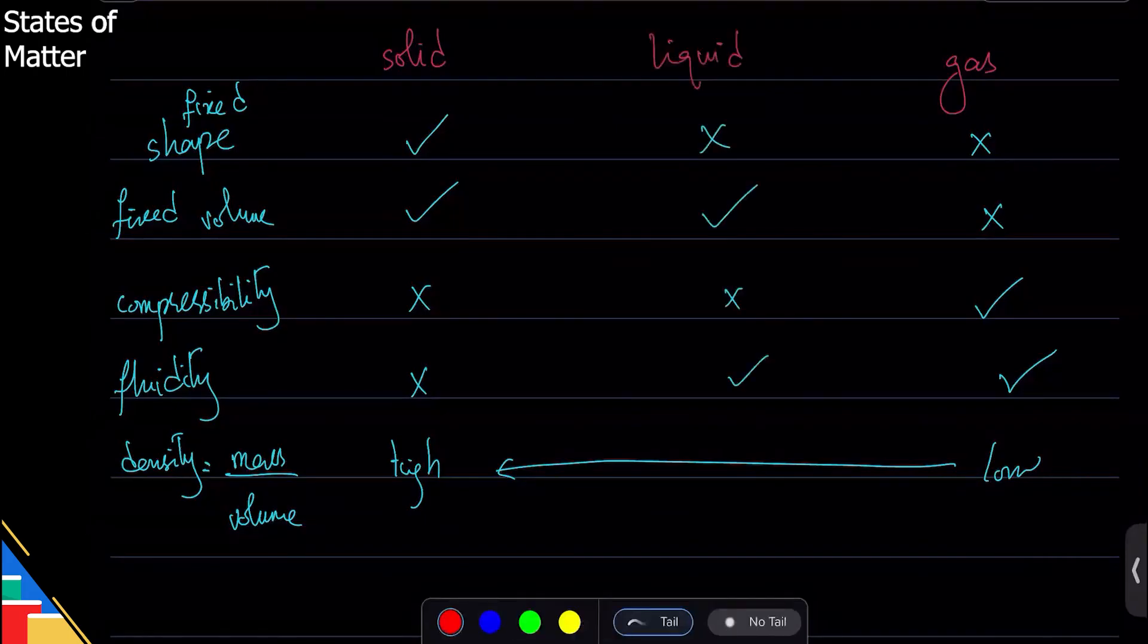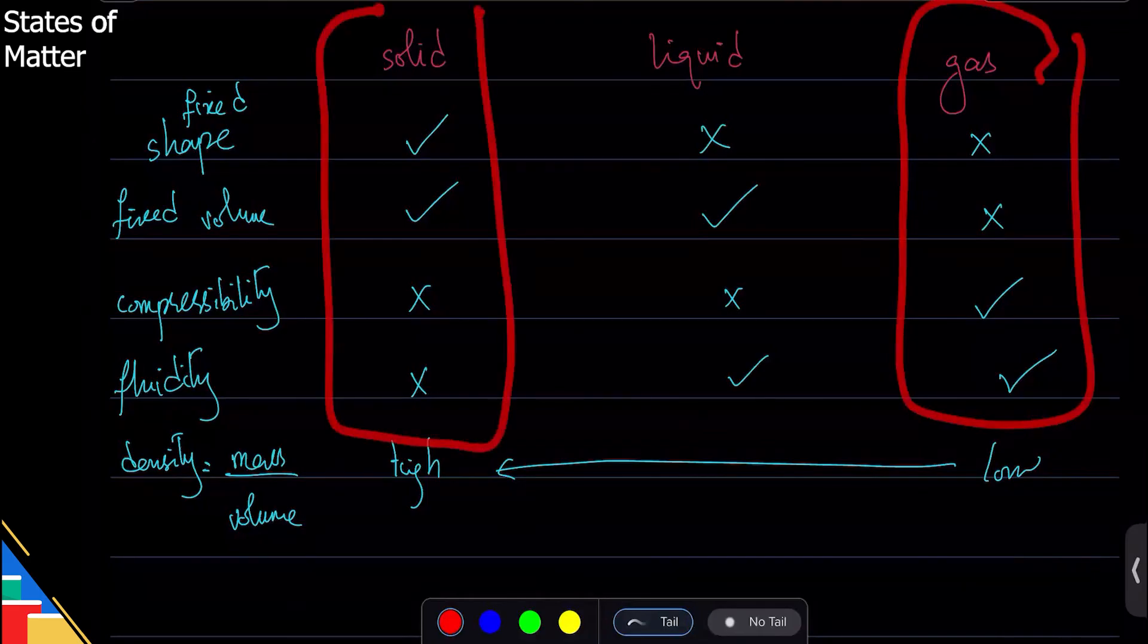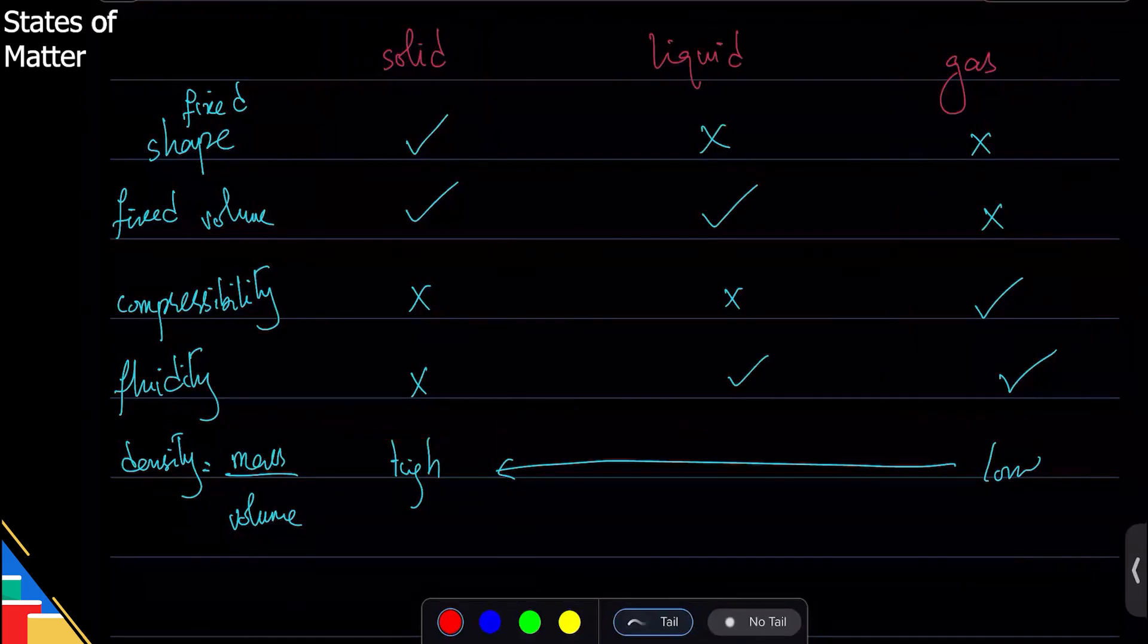If you know this state of matter, you know exactly how this state of matter behaves. Liquid is always in the middle. It has some properties of one and some properties of the other.